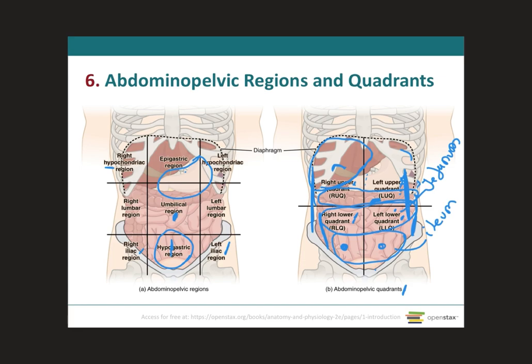Down here you're going to have the anus as well as the urinary bladder in this pelvic region. Because they're located in the mid-sagittal region — right down the line — they're going to be divided into half, so half will be on the right side and the other half on the left side. And these are mainly the organs that you need to know as of now.